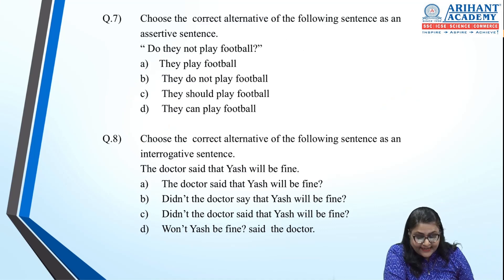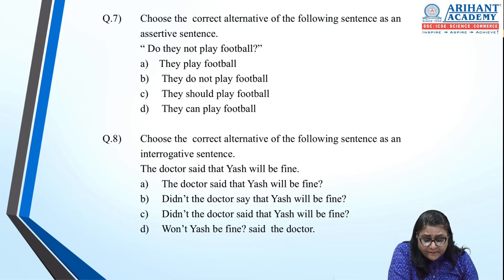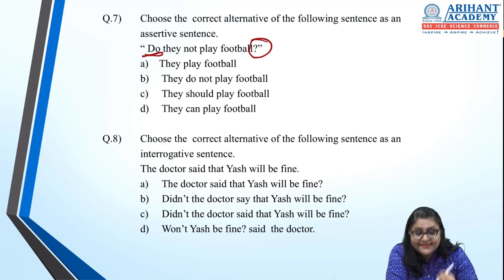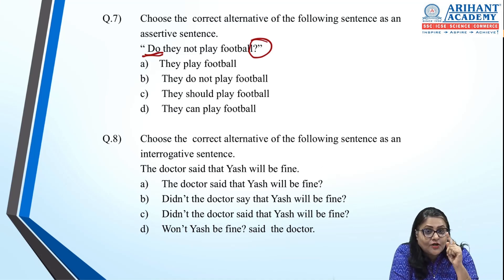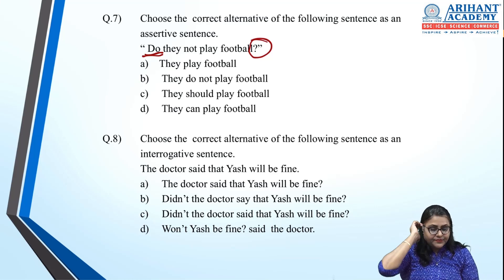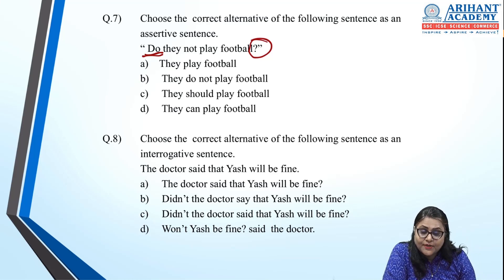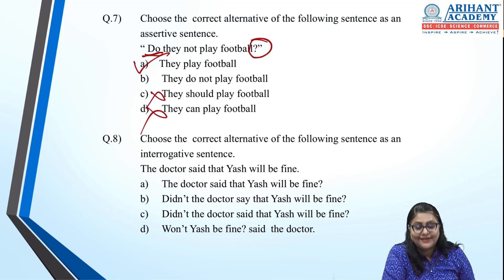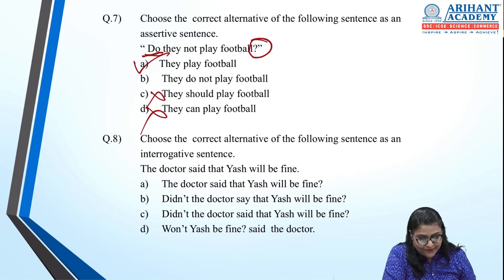Seventh: change to assertive. The sentence is 'Do they not play football?' — an interrogative. 'Do' indicates present tense, so the answer must also be present tense. It's a negative question, so a positive answer is required. Option A — 'They play football' — is correct, as 'play' is also present tense.